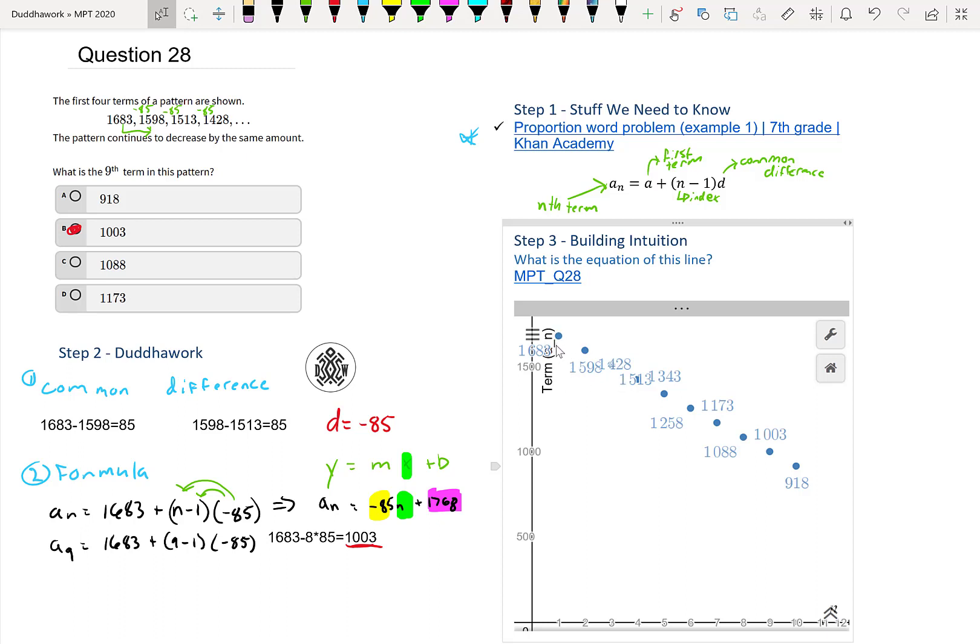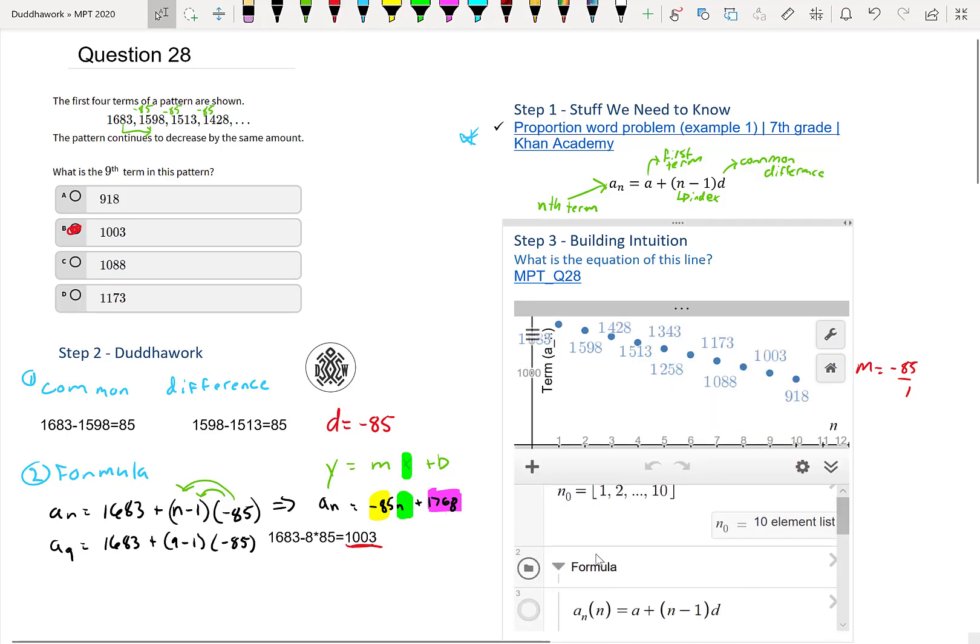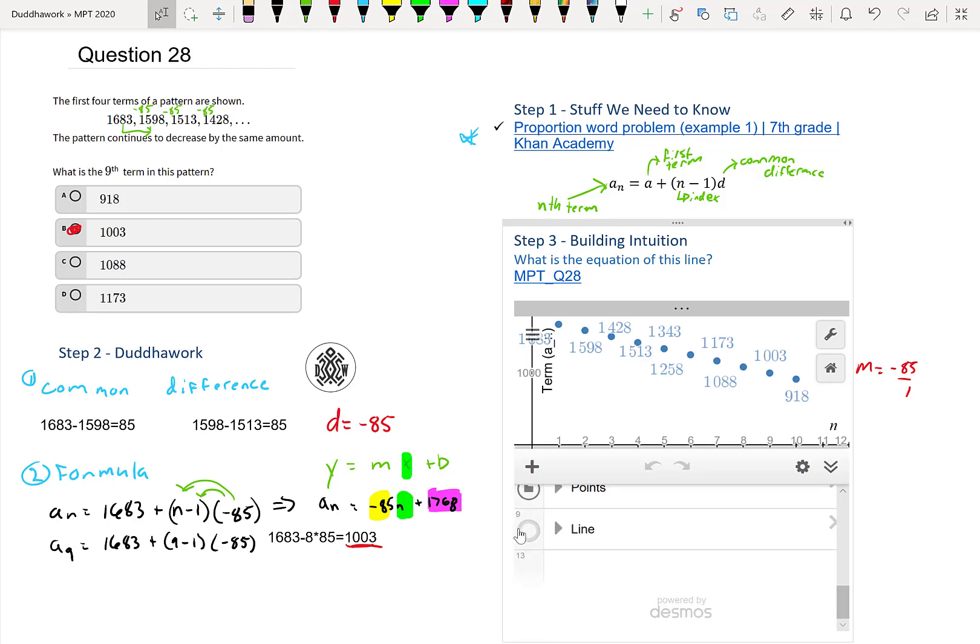It goes down by 85 each time for one. So your M is negative 85 over one. And your B, well, you need to go up by 85. You would need to go up by 85 to find your Y intercept. That's why we do plus 85. And if you want, you could even generalize the formula. But before we generalize the formula, let's just look what happens when we put our line. Our line has this equation.